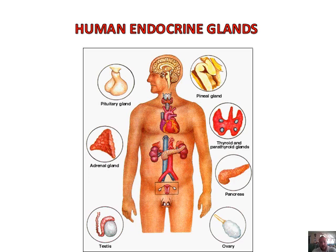We've got the pineal gland — I'm not too worried about that. Thyroid and parathyroid glands — you can see the four white little dots on the thyroid gland; the parathyroid glands are actually the size of a grain of rice. Then you've got the pancreas, the ovary, the testes, the adrenal gland, and the pituitary gland.